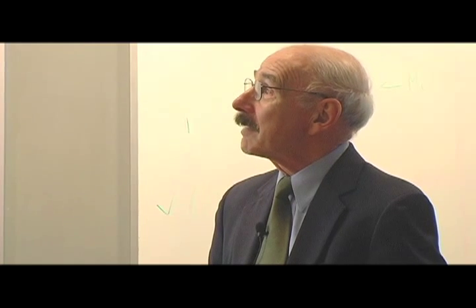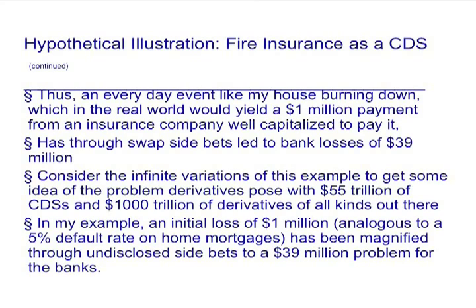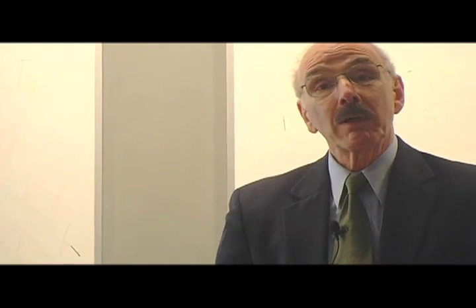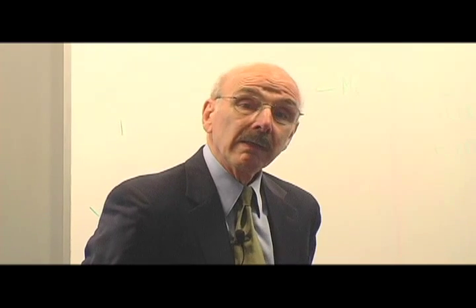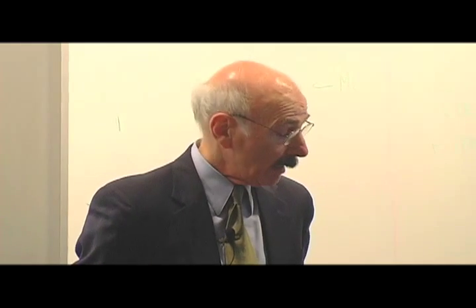Thus, an everyday event like my house burning down, which in the real world will yield a $1 million payment from an insurance company well capitalized to pay it, has through side bets in swaps led to bank losses of $39 million. Consider the infinite variations of this example to get some idea of the problem derivatives pose at the level of $55 trillion of them out there. An initial loss of $1 million has been magnified through undisclosed side bets to a $39 million problem for banks. Originally, banks weren't supposed to be lending to highly leveraged speculative investors — they were supposed to be lending into the real economy, and they did so ever since the Great Depression until the Glass-Steagall Act, which prevented this kind of lending, was repealed in 1999.